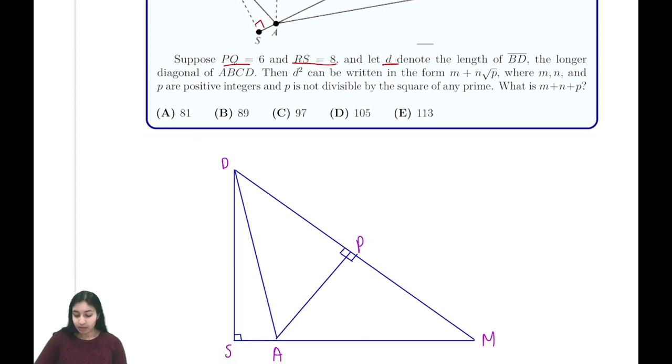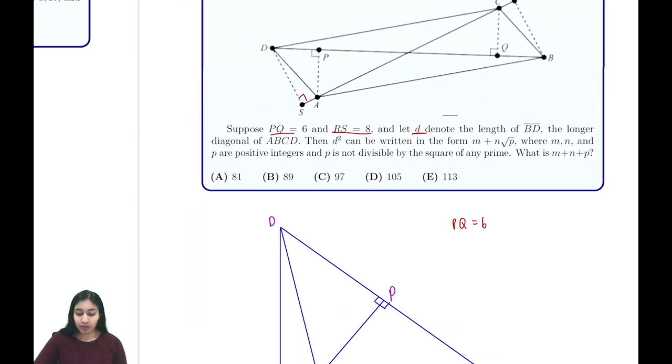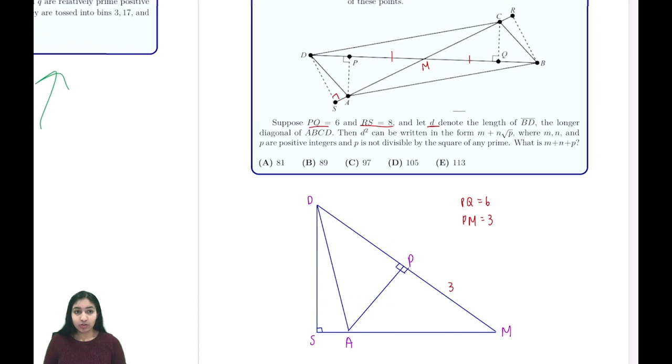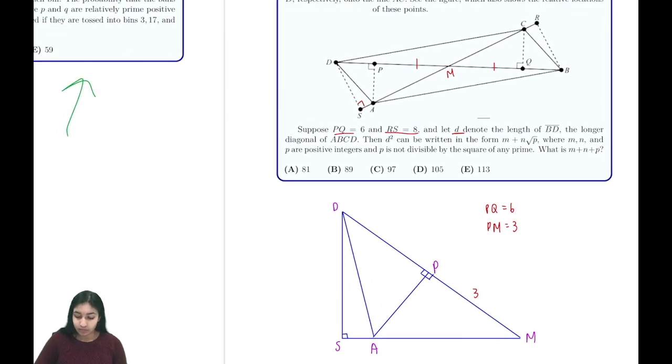We know that PQ equals 6, and because of the properties of a parallelogram, PM is going to equal PQ over 2, so PM equals 3. We also know that RS equals 8, so MR equals MS, which means MS equals 4. Let's add these values to our diagram.